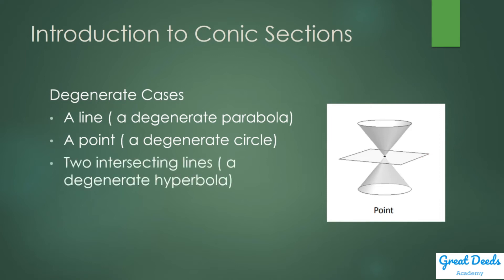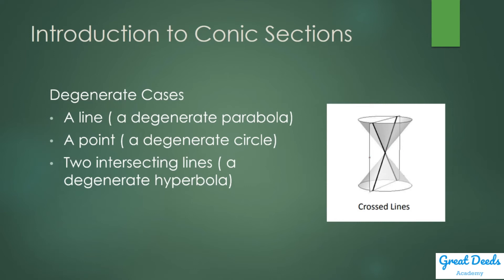Two intersecting lines is a degenerate case of a hyperbola. We cut the cone with a plane perpendicular to the base, but we hit the cone right at the join. The intersection between the cone and the plane produces two intersecting lines. So the degenerate cases are special cases of the parabola, the circle, and the hyperbola.